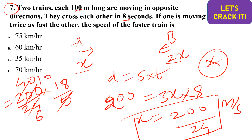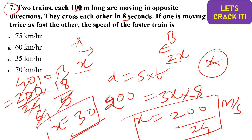30 km/h is the speed of the slower train (x), but we need the faster train's speed which is 2x. So the faster train's speed is 60 km/h. Option B is the correct answer.